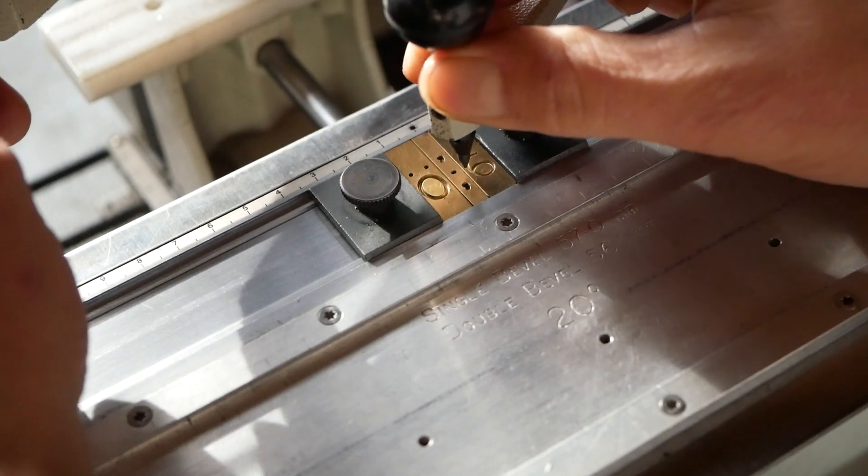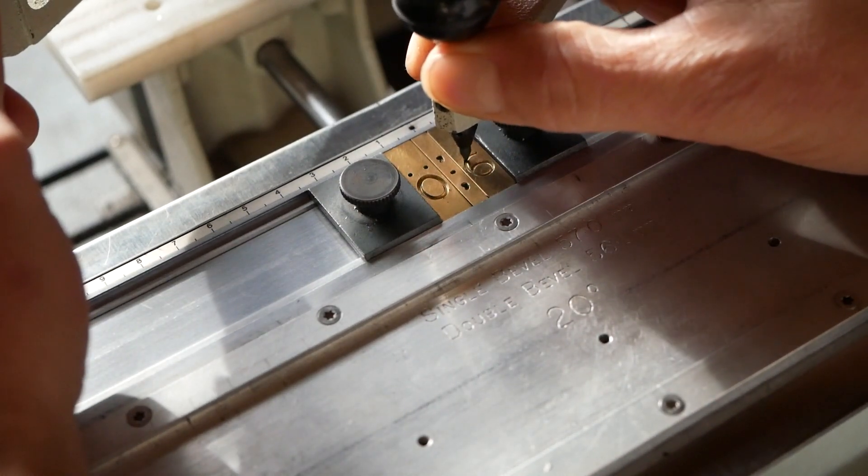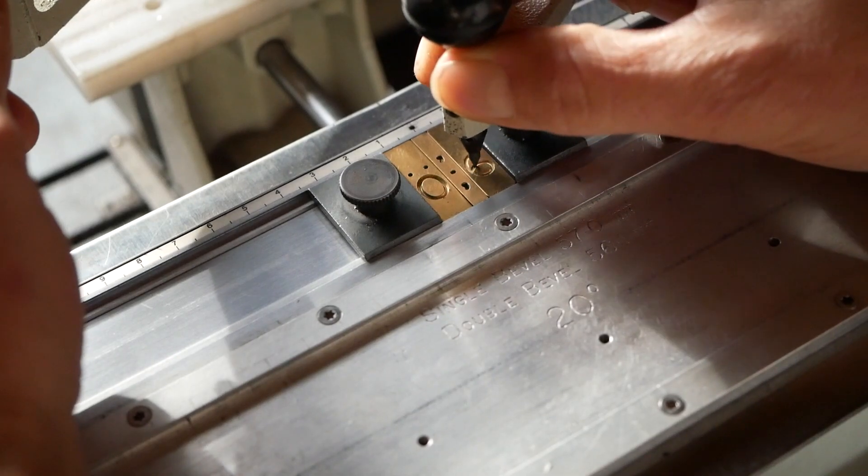We don't need any clever indexing system here because we can use the divisions we made earlier as a witness mark to align to the centre of the vise.